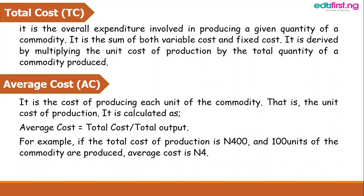Average cost is the cost of producing each unit of the commodity — that is, the unit cost of production. It is calculated as total cost divided by total output. For example, if the total cost of production is 400 naira and 100 units of the commodity are produced, the average cost is simply 400 divided by 100, which gives 4 naira.